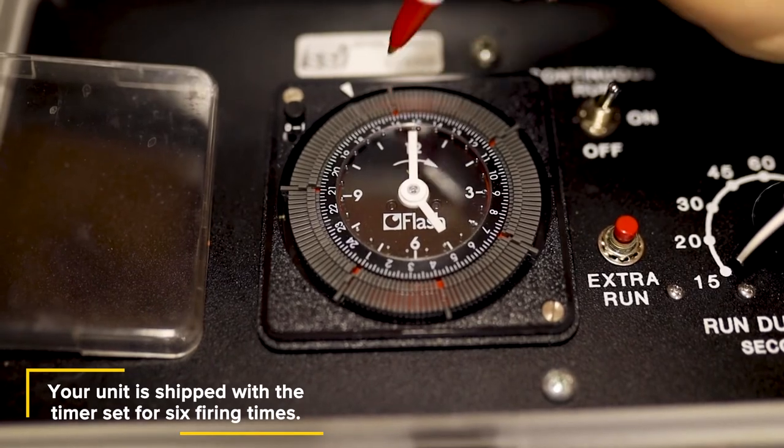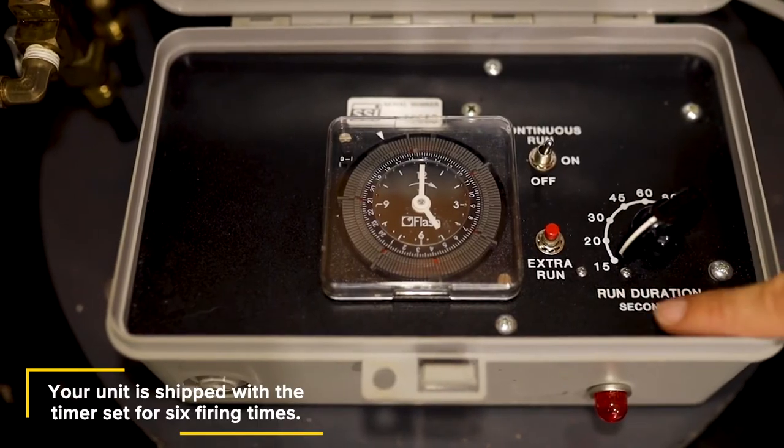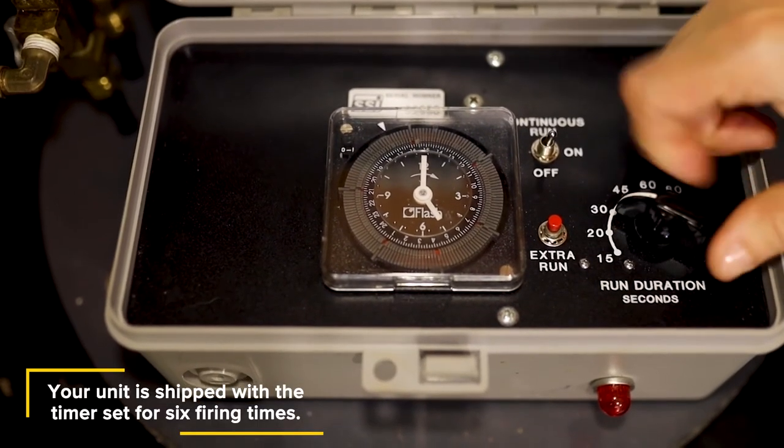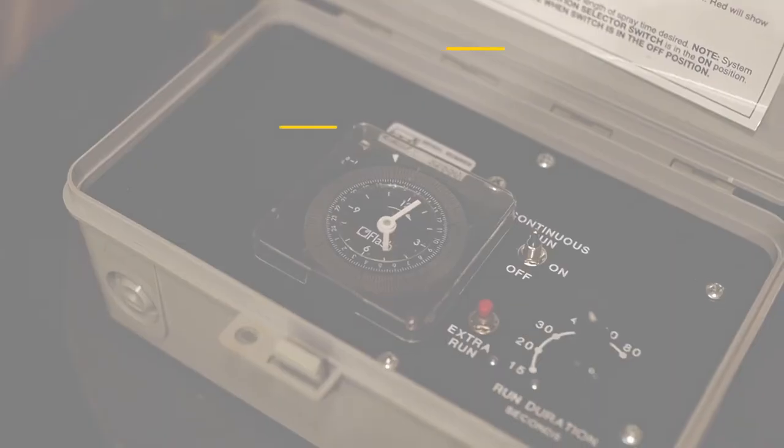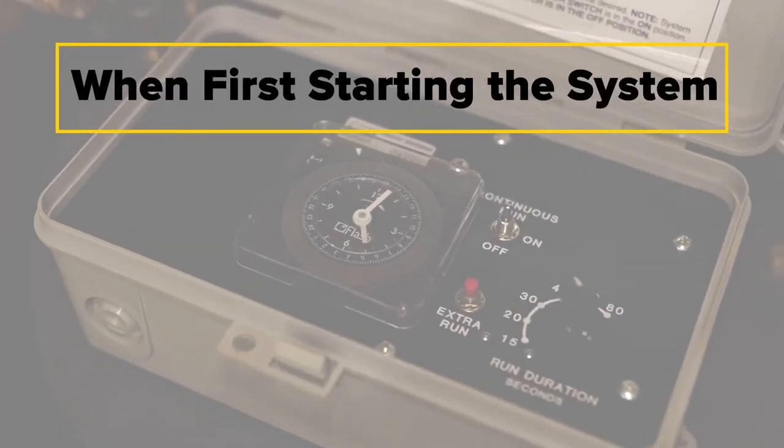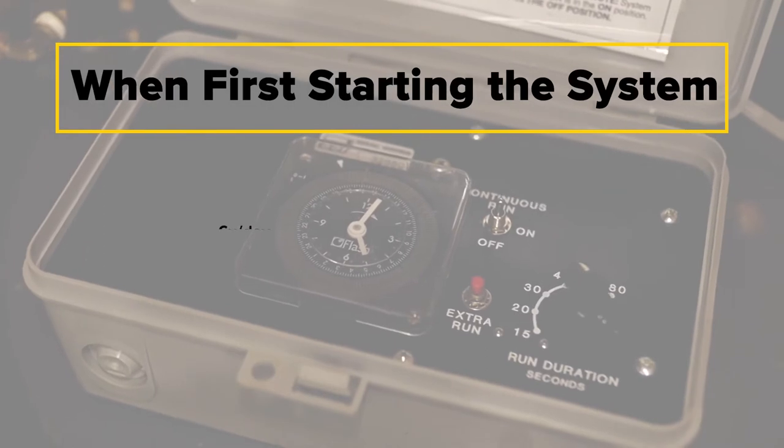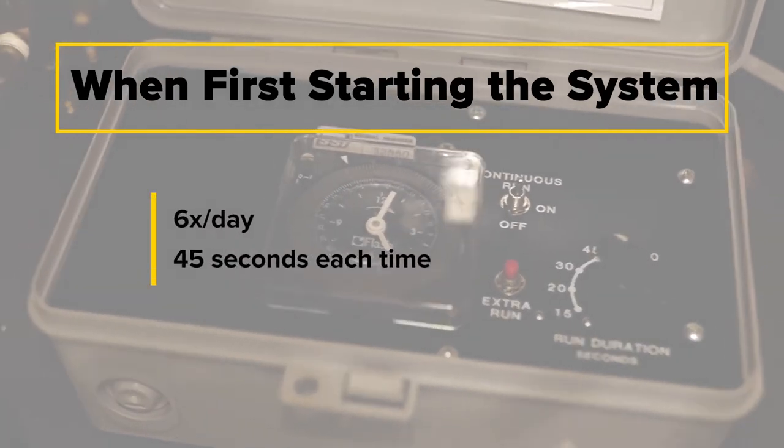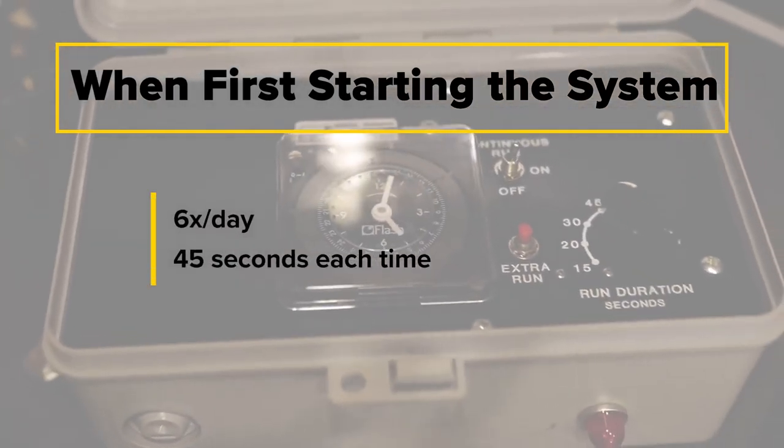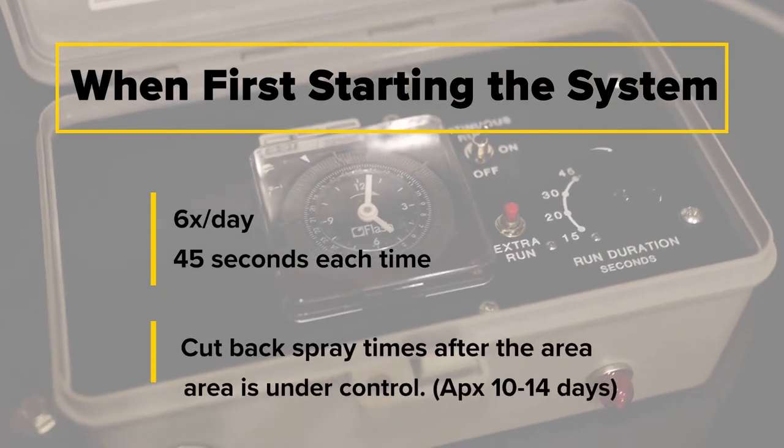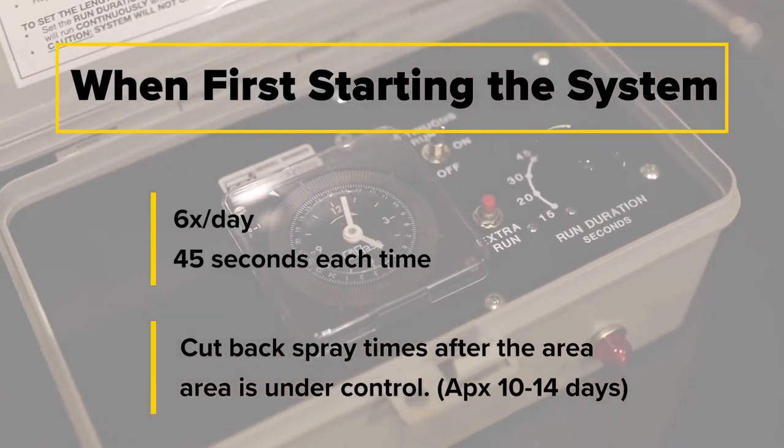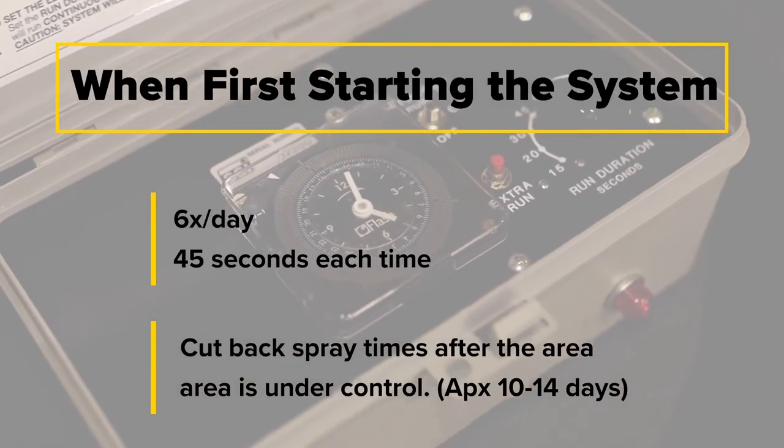Spray time should be set from early morning to dusk. Set the run duration selector switch to the length of spray time desired. When you're first starting the system, we recommend setting the timer to operate six times a day for 45 seconds each time. When the area is under satisfactory control within 10 to 14 days, cut back the number of spray cycles and duration time to maintain control.